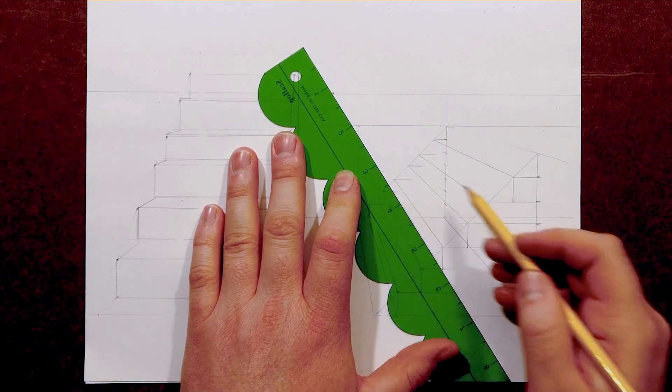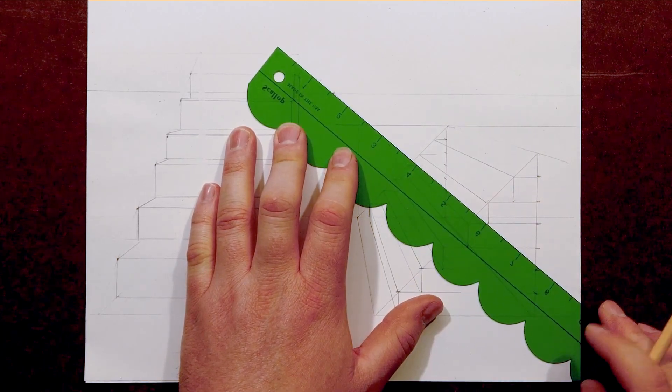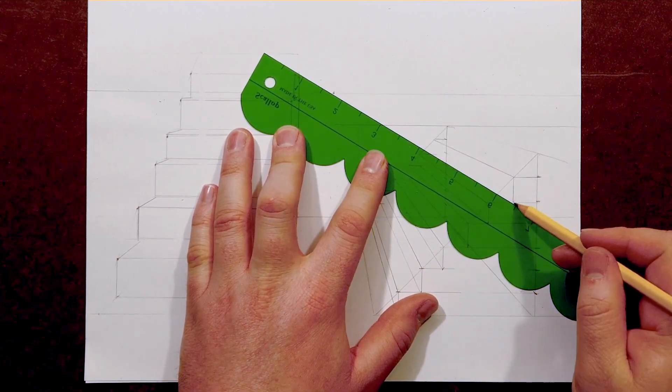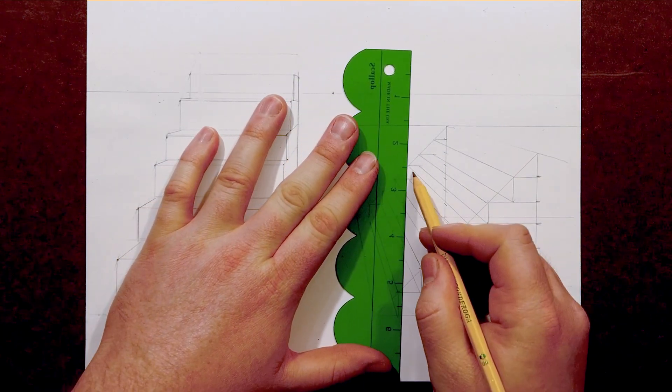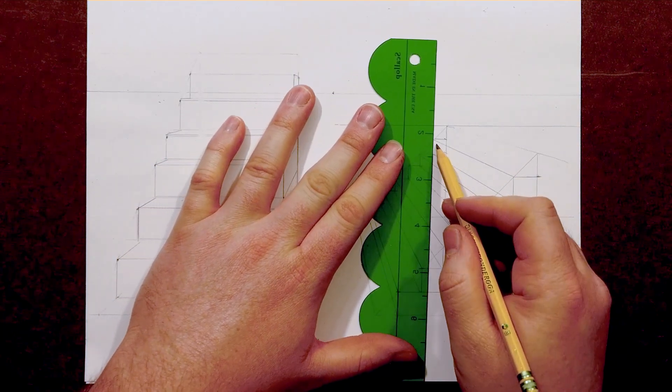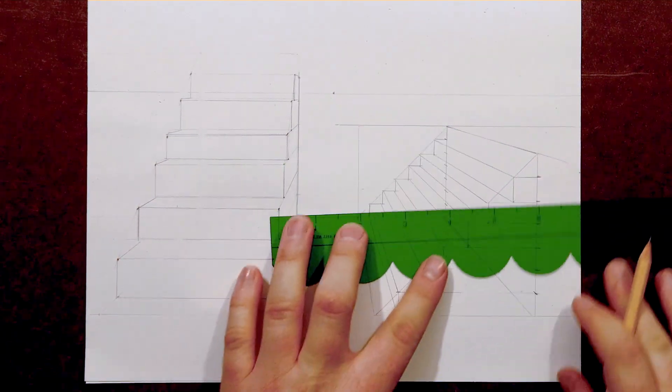The beauty of a system like one point perspective is that it limits your choices to just three types of lines: vertical, horizontal, and converging. With one out of three odds, even if you guess which line to draw, if you cross that one off the list, if it wasn't right, you only have two more to go.